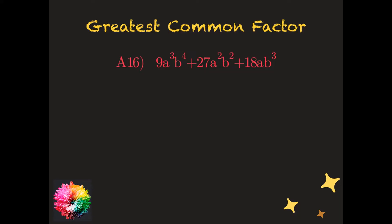We're going to begin with question 16 in Part A of your review booklet. This is a greatest common factor question. You should know that the very first step in any factoring question is to remove the greatest common factor. I like to break it up into the coefficients and then the variables. Our coefficients in this question are 9, 27, and 18, and the greatest common factor between all three of these numbers is 9.